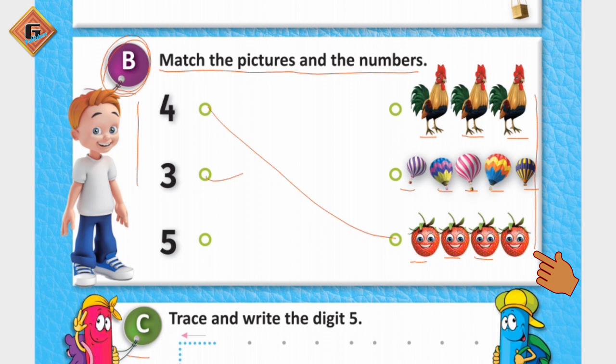After that we are having three roosters. We will match it here with this: one, two, and three. And at the last we are having five hot air balloons. So we will match this with this, and our B topic is complete.